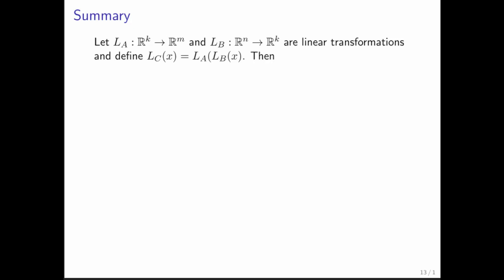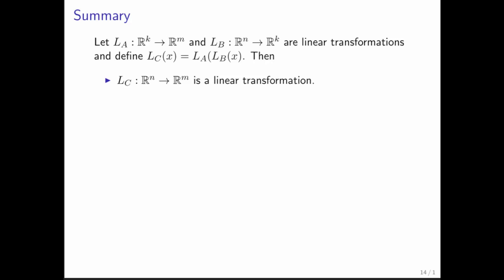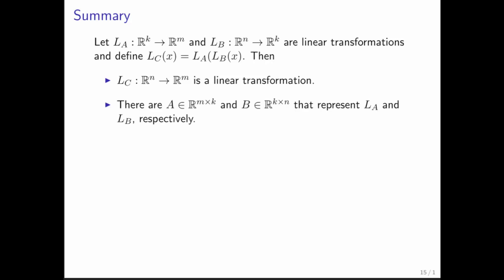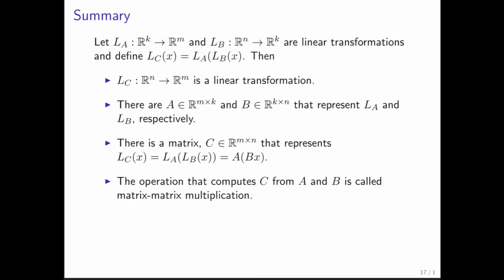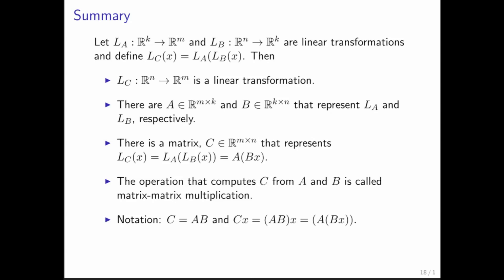The simple observation is that if L sub A and L sub B are linear transformations and you define L sub C this way, then you find out that L sub C is a linear transformation. There are matrices associated with L sub A and L sub B, and there is a matrix associated with the new linear transformation L sub C. The operation that computes C from matrices A and B is called matrix-matrix multiplication. The notation we're going to use is that C equals A times B, and if you're applying C to some vector x, that's the same as applying A times B to vector x, which is the same as first applying B to x and then applying A to the result.